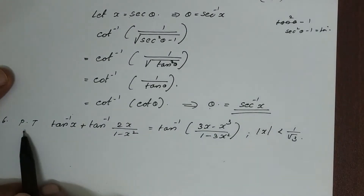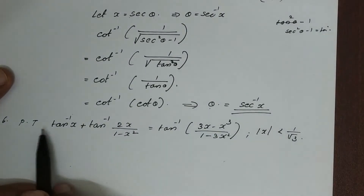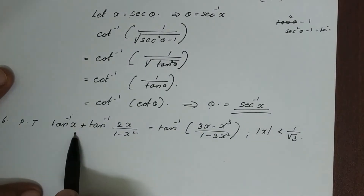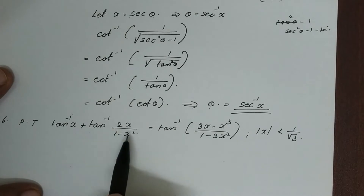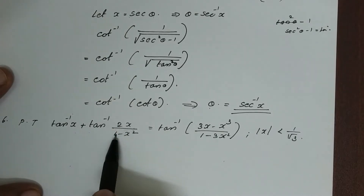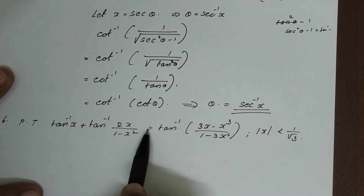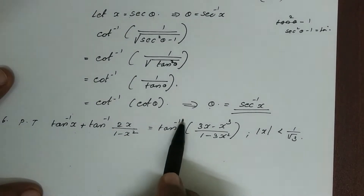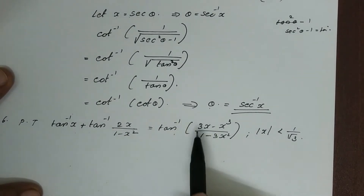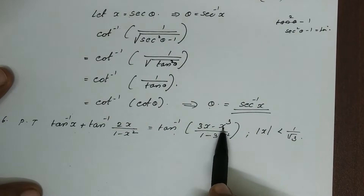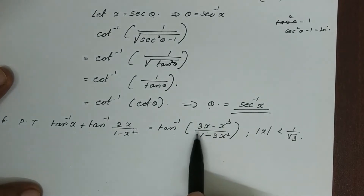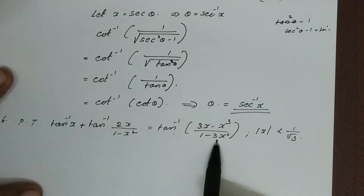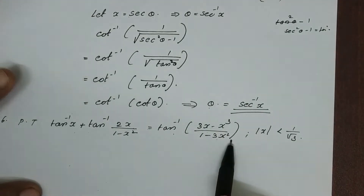Next problem. Prove that tan inverse x plus tan inverse 2x divided by 1 minus x squared is equal to tan inverse 3x minus x cubed divided by 1 minus 3x squared.